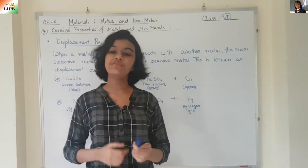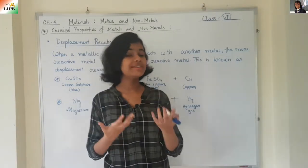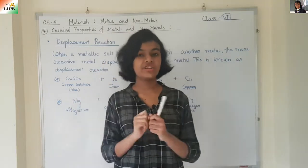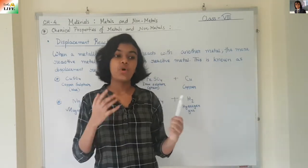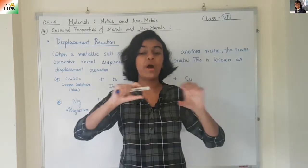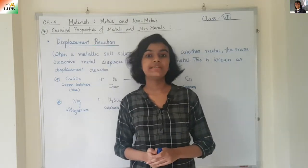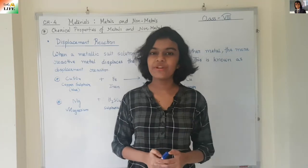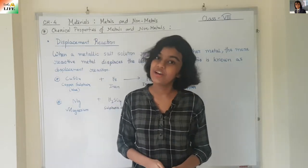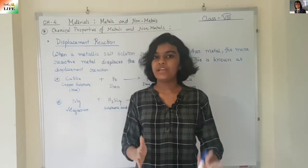Now we're going to move to the next topic: uses of metals and non-metals. Metals are used in many ways. For example, copper is used to make electrical wires, and aluminium is also used to make wires to carry electric current. Metals like copper and aluminium are used for this purpose because they are good conductors of electricity, as we learned in the physical properties.